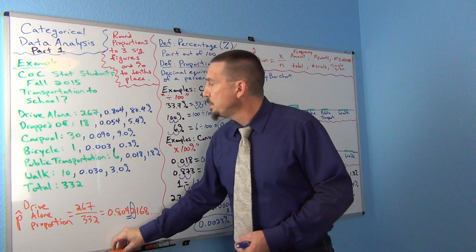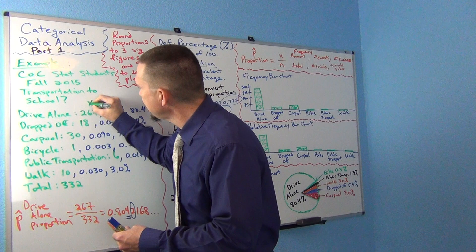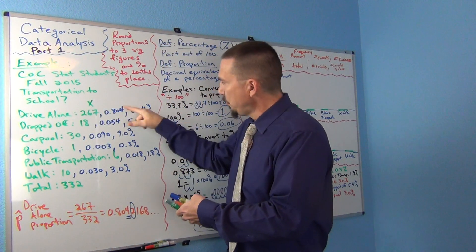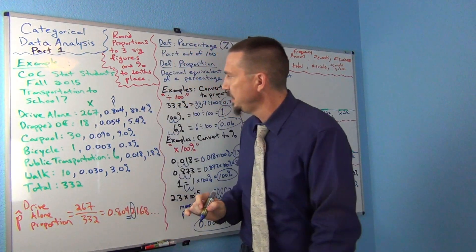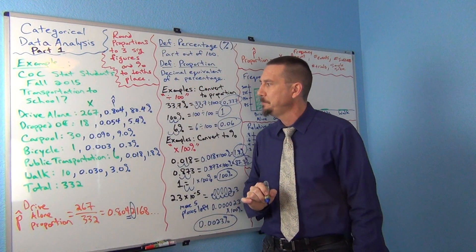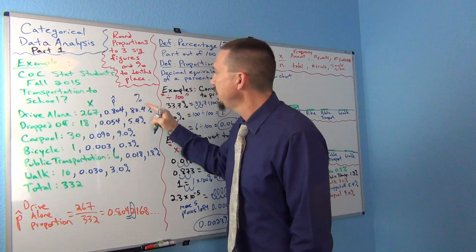So if you want, these counts here are your x. And these proportions here are sometimes denoted as a p hat. You take a p and you put a little hat on it. And then these, of course, are the percentages at the end.